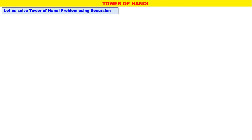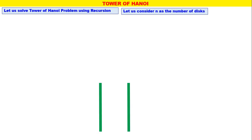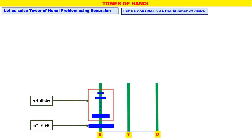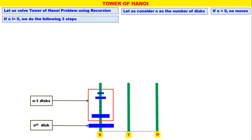Now we will go straight to the Tower of Hanoi problem using recursion — how to solve it using recursion. Let us consider n as the number of disks, and three towers S, T, D. Totally n number of disks are there, shown in two partitions: n minus 1 number of disks and the nth disk. Now if n is equal to 0, there are no moves. When n is not equal to 0, we do the following three steps.